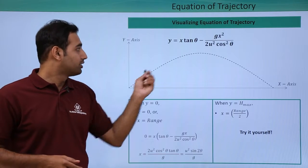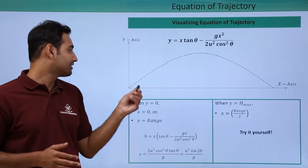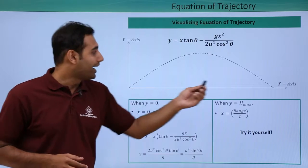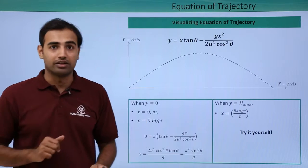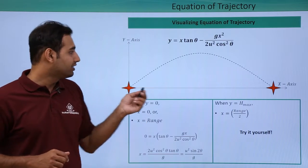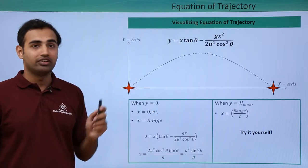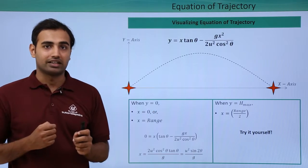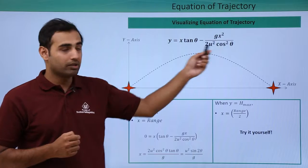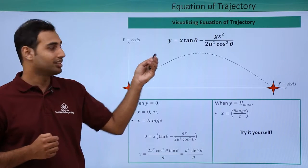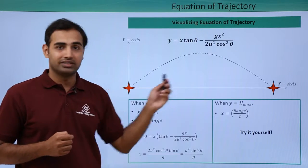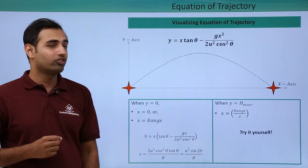Now essentially, here we have the parabola intersecting the x-axis at origin and at x is equal to range value. So I can see here that at these two points, clearly we have our parabola intersecting our x-axis. So in this equation, if I put y is equal to 0, which essentially means where does the parabola intersect the x-axis, and if I solve for x,